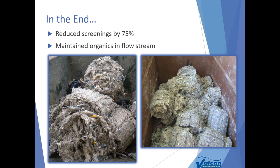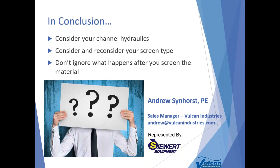In summary, with a washing press, the two key metrics are a 75% reduction in volume and 95% of organics washed back into the flow stream, while also being able to convey screenings a distance if necessary. In conclusion, three takeaways: first, consider your channel hydraulics — don't just select the screen, also select the channel hydraulic design. Second, reconsider your screen — is maintenance more important than capture, or is capture more important than maintenance? Third, don't ignore what happens after the screen — let screenings handling, washing press, or conveyor drive the project just as much as the screen itself.